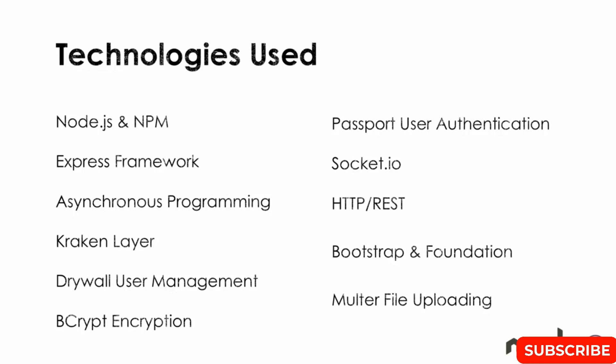One or two projects will use Kraken, which is an extra layer that runs on top of Express to give us more functionality and security. Drywall is a user management system, bcrypt can encrypt and hash passwords, and Passport is a flexible user authentication system. Socket.io allows us to take advantage of web sockets.